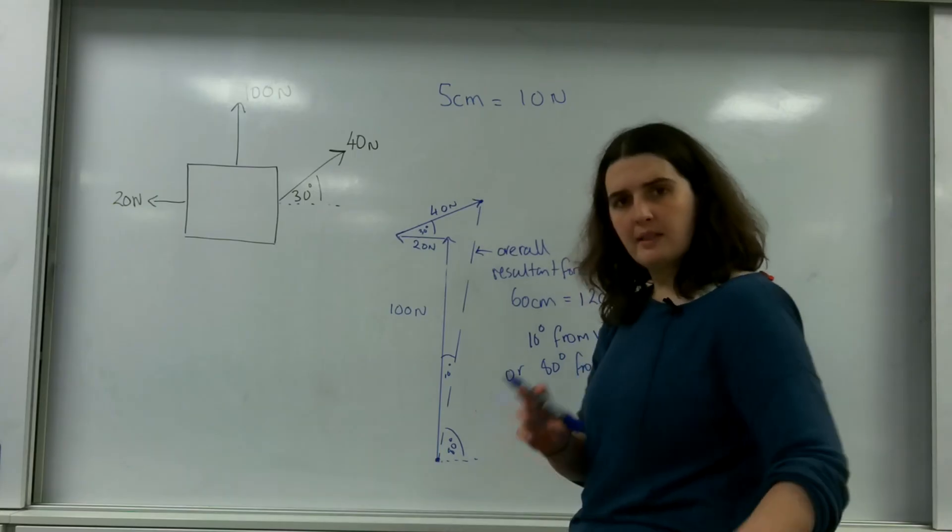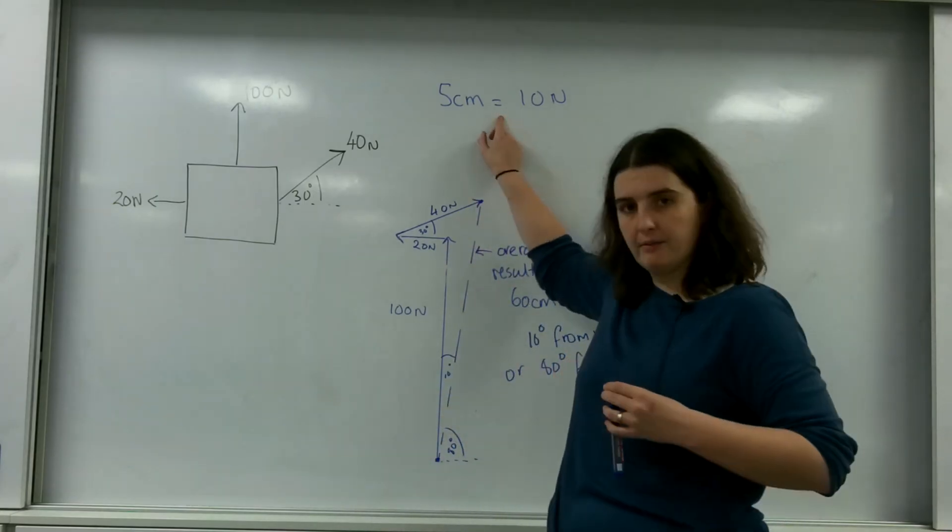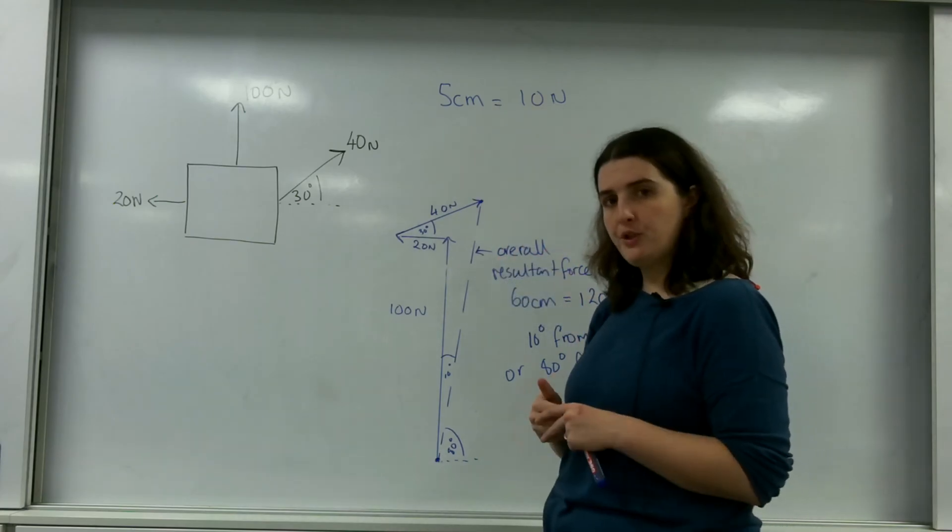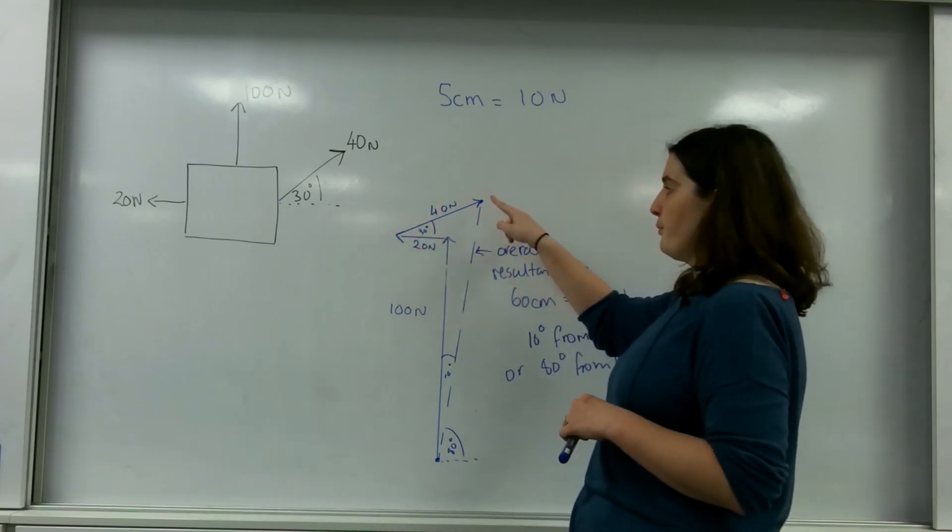So the important part to take from a scale diagram of vectors is this: One, choose your scale. Two, make sure when you're drawing your vectors that you're drawing one and then you join another one on and then you join another one on.